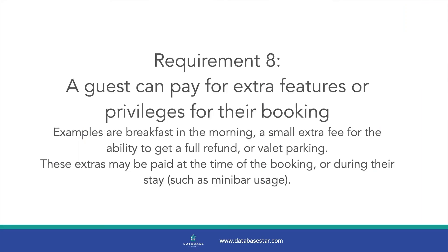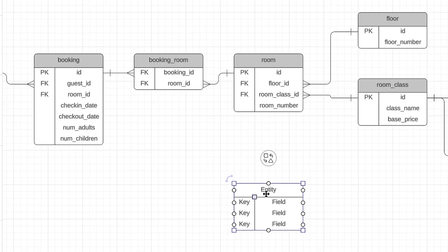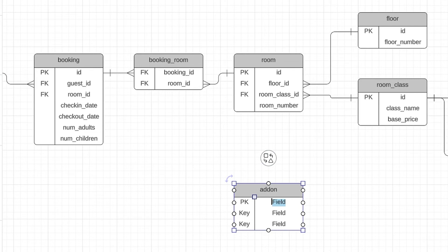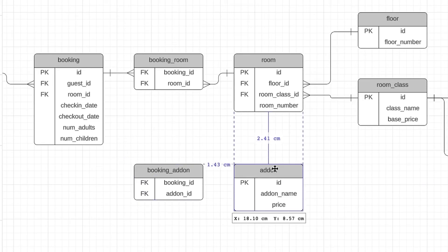Requirement 8 is where a guest can pay for extra privileges for their booking, such as a minibar or valet parking. It seems like there's a defined list of things that can be purchased. We'll create a lookup table for it — we'll call it add-on, with an ID field, an add-on name column, and a price. It's related to a booking, and since a booking can have many add-ons and an add-on can be for many bookings, this is a many-to-many relationship. We add a joining table with both IDs as foreign keys. Requirement 8 is now met.